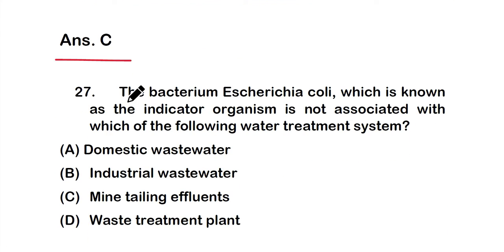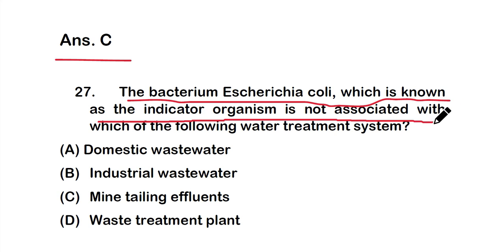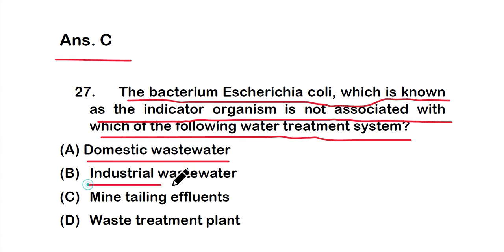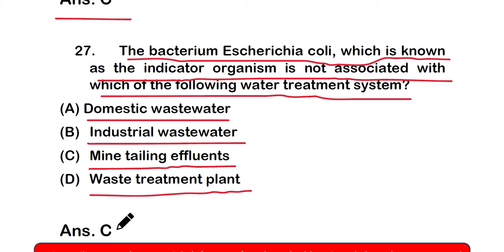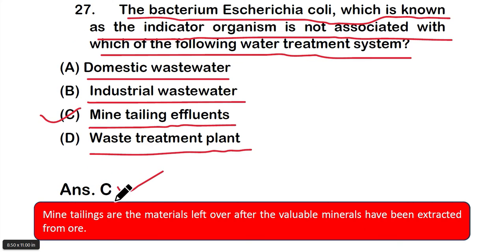Question number 27: The bacterium Escherichia coli, known as the indicator organism, is not associated with which of the following water treatment systems? Options: A) domestic wastewater, B) industrial wastewater, C) mine tailing effluent, or D) water treatment plant. The right answer is option C — mine tailing effluent. E. coli is not used as an indicator organism in mine tailing effluent treatment because mine tailings are material left over after valuable minerals have been extracted, and E. coli is mostly associated with fecal contamination.